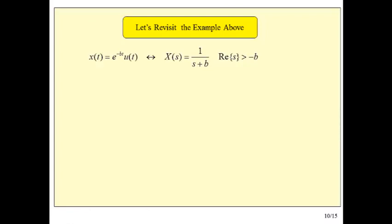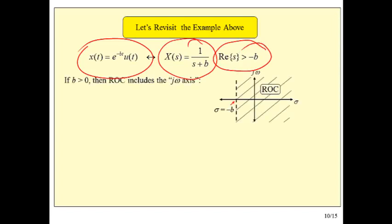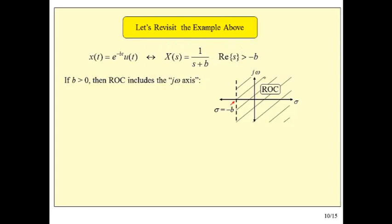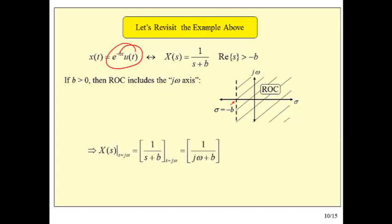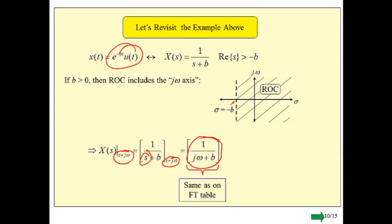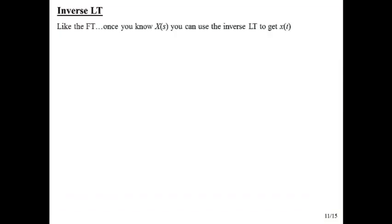Revisiting our example: we have X of s and the region of convergence. When b is greater than zero, the signal is decaying, the Fourier transform exists, and the j-omega axis lies inside the region of convergence. We're then free to evaluate the Laplace transform on the j-omega axis — mathematically, that means replacing s by j-omega. Taking our expression and replacing s with j-omega, we get 1 over j-omega plus b. If you look this up in the Fourier transform table for positive b, you'll find exactly the same result.